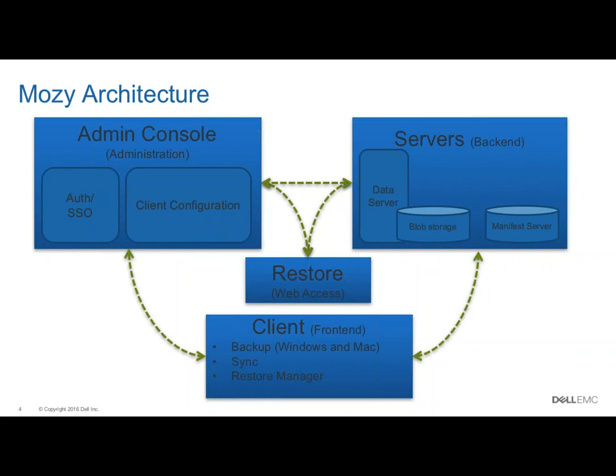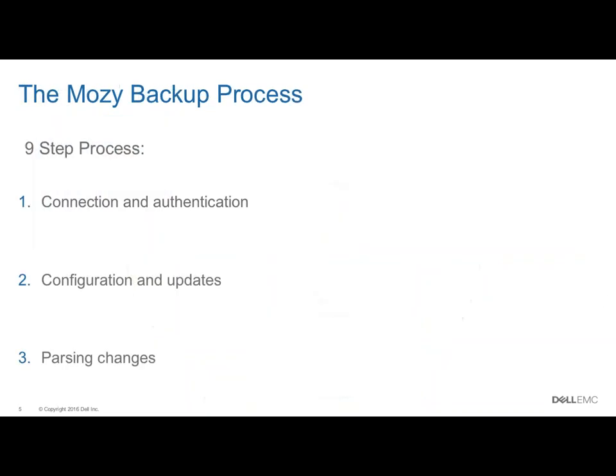Moving on to the backup process — this is the real part of the session. Our backup process is a nine-step process. The first step is connection and authentication. When you press the start button, or have an automatic backup start, the connection is opened to our backend, through any firewall on your computer, and out to the Mosey servers. That connection isn't yet ready for transferring files, because we have yet to authenticate. The client authenticates itself, presenting its password and username — your email address and the password you selected.